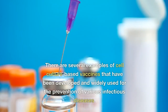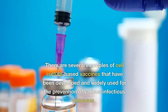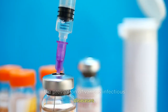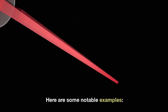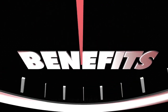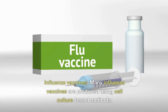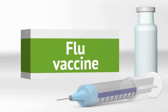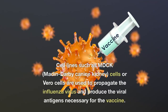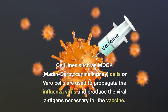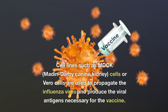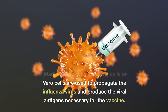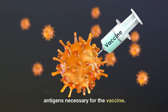What are the examples of cell culture-based vaccines? There are several notable examples of cell culture-based vaccines developed and widely used for the prevention of various infectious diseases. Influenza vaccines: many influenza vaccines are produced using cell culture-based methods. Cell lines such as MDCK, Madin-Darby Canine Kidney, cells or Vero cells are used to propagate the influenza virus and produce the viral antigens necessary for the vaccine.